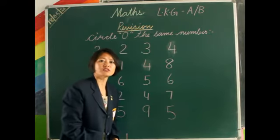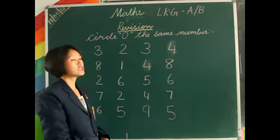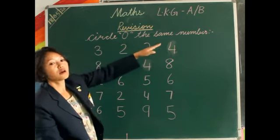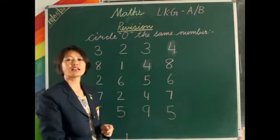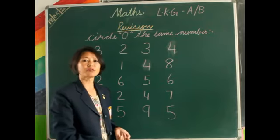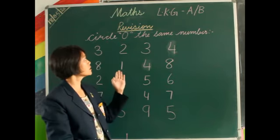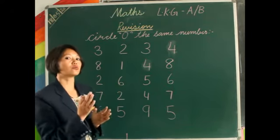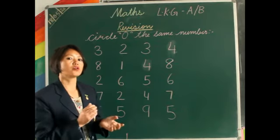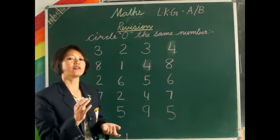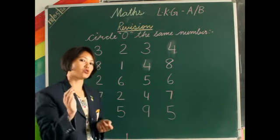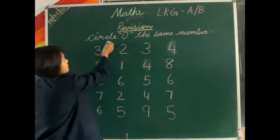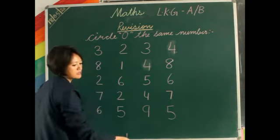Okay, once again welcome, children. Today we learn to circle the same number. In the previous class we already learned numbers from 1 to 20. Here you have to circle the same number — like 1 and 1, 2 and 2, 5 and 5, 6 and 6, 8 and 8, and so on. So let's start — circle the same numbers.